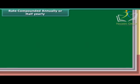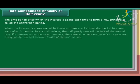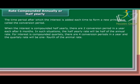Rate Compounded Annually or Half Yearly: The time period after which interest is added each time to form a new principal is called the conversion period. When interest is compounded half yearly, there are two conversion periods in a year, each after six months. In such situations, the half yearly rate is half of the annual rate. For interest compounded quarterly, there are four conversion periods in a year and the quarterly rate is one-fourth of the annual rate.